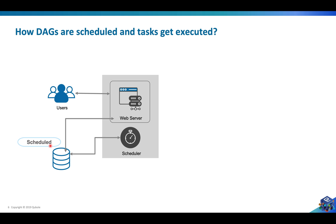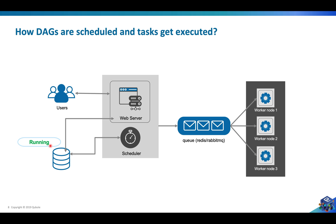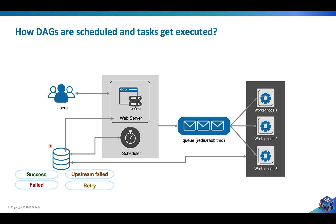The status of the DAG is changed to running. Then the scheduler sends those tasks to the queue and the status is updated to queued. The executor then picks up all the tasks from the queue and sends them to the worker. The status of the task instance is then updated to running. Once executed, the executor updates the final status of the task and DAG in the database.